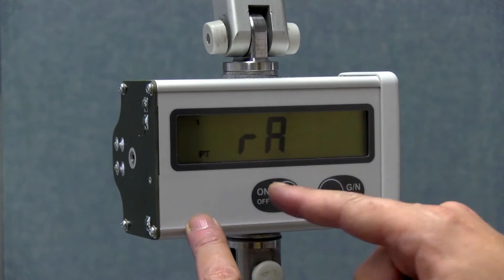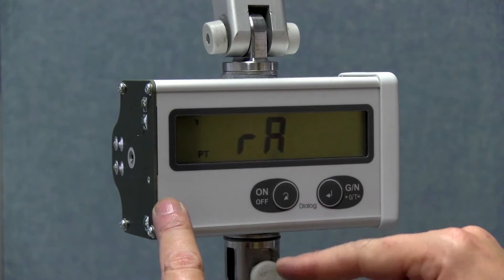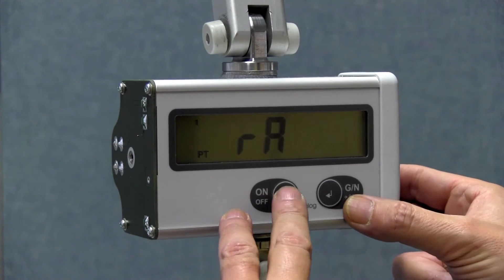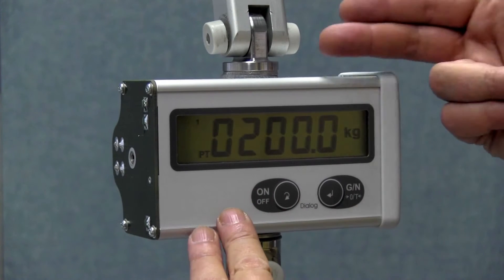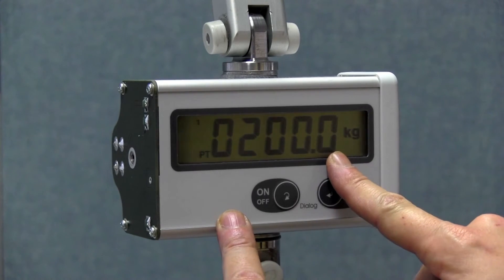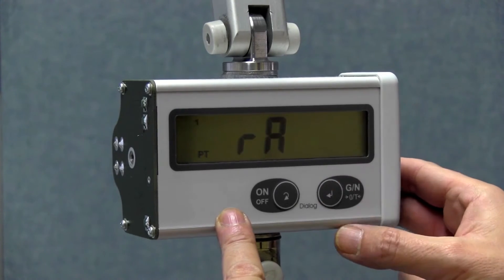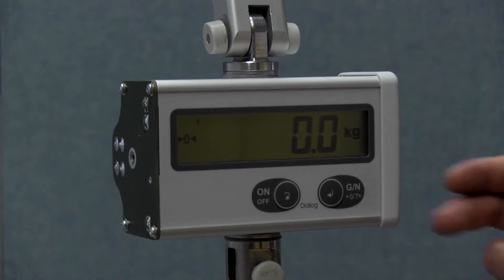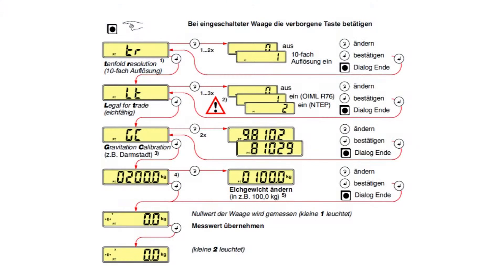The next key I press takes me to the range setting of the scale, a one range or two range scale. In this case, I see that I am working with a two range scale, and that the changeover point is at 200 kilograms. I confirm the changeover point, and by pressing the hidden key again, it takes me back to the normal weighing range.